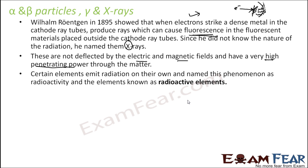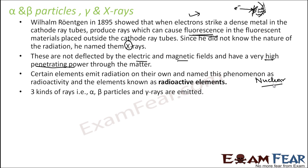Certain elements emit radiation on their own, and this phenomenon is called radioactivity. These elements are called radioactive — for example, uranium and thorium. Typically elements at the end of the periodic table are radioactive, and they are used for nuclear power, nuclear fuel, and nuclear bombs.